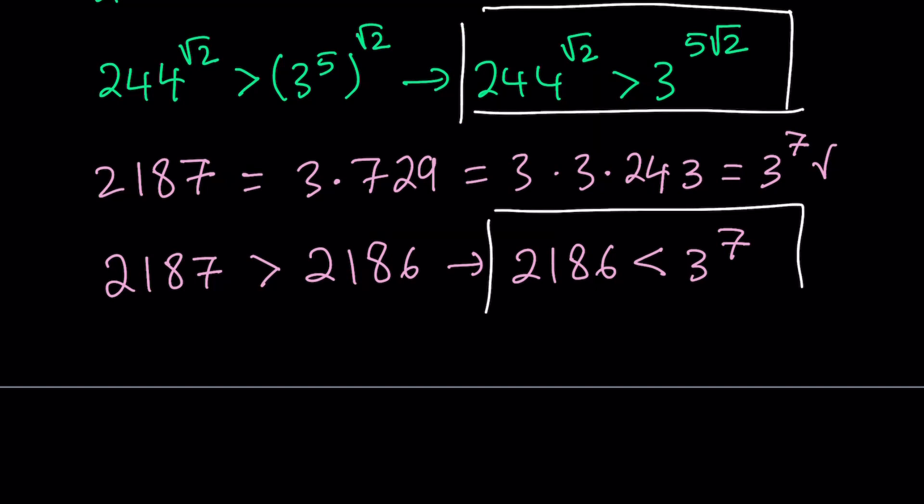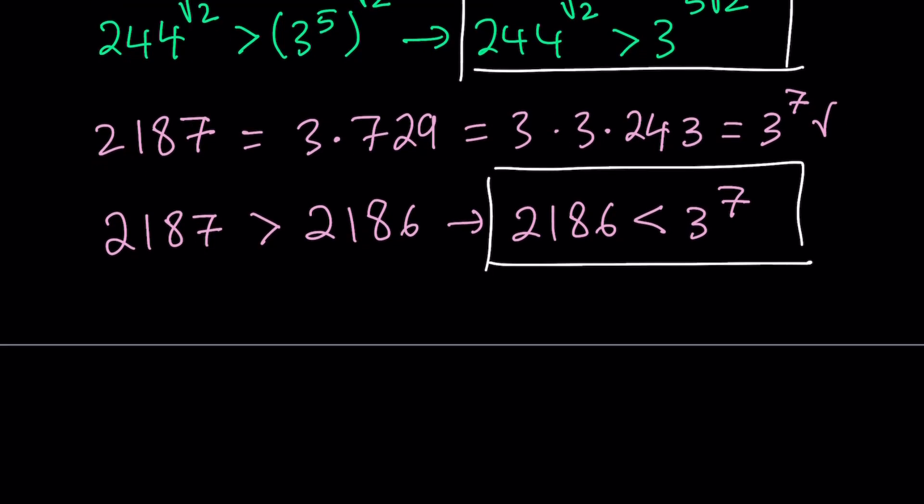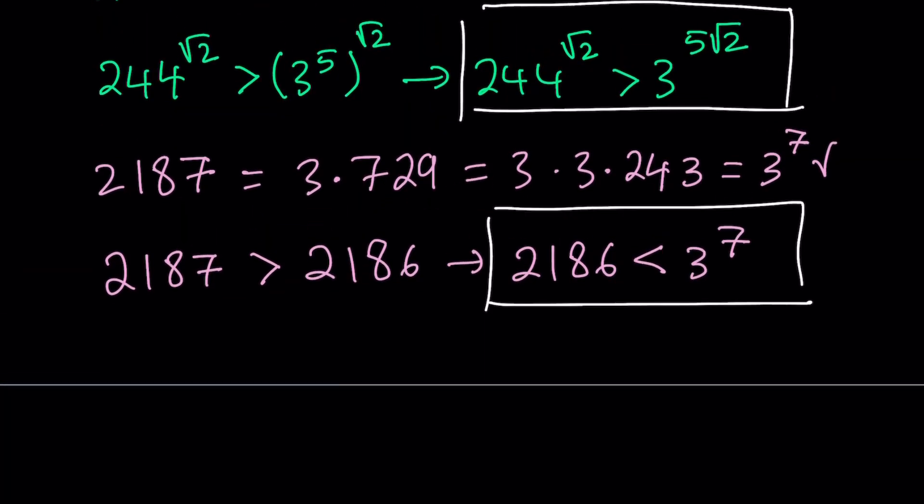Here's the two inequalities that I'm having, and notice that both of these are my numbers. 244 to the power square root of 2, as well as 2,186 are both of my numbers, and I was able to compare both of them to a power of 3. Now is the time to compare the powers of 3. For that purpose, I need to make a comparison between these two numbers.